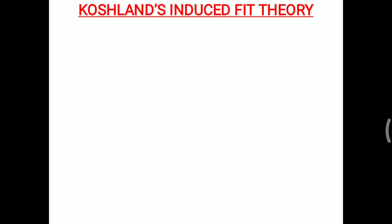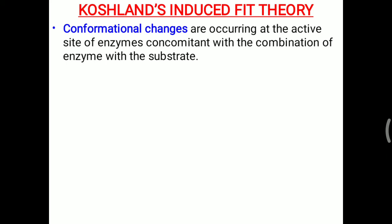The third theory is Koshland's induced fit theory. Conformational changes occur at the active site of the enzyme concomitant with the binding of the substrate. You can remember this using a glove analogy: initially gloves are folded, but when you put your hand inside, the glove gradually opens up and completely fits over your hand. Similarly, Koshland's induced fit theory explains that once a substrate attaches, conformational changes gradually occur in the enzyme until it is completely fitted around the substrate.